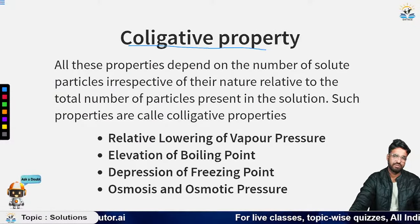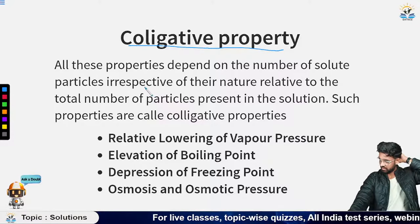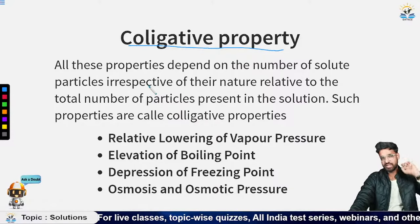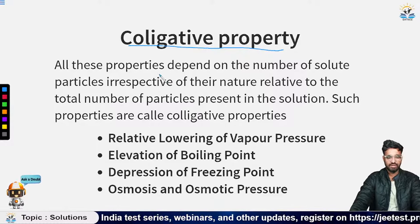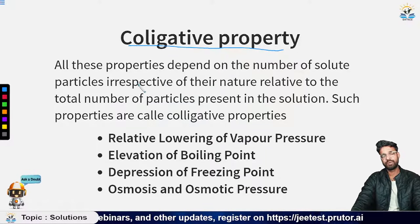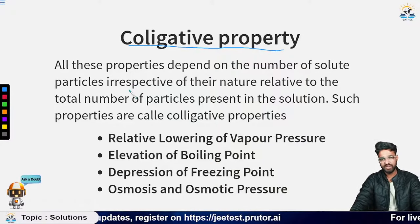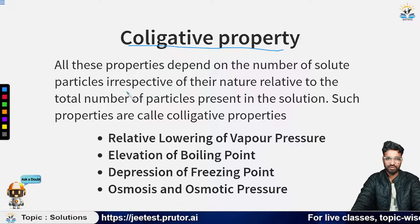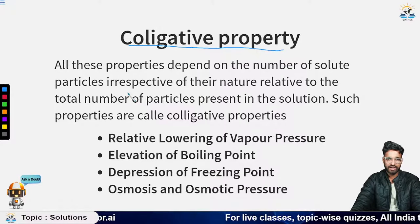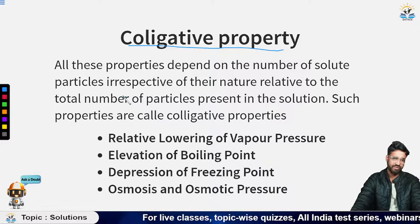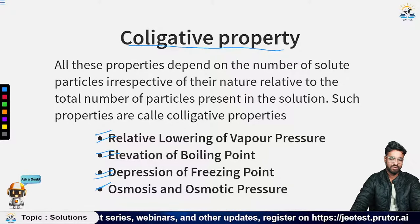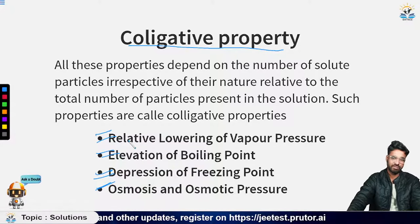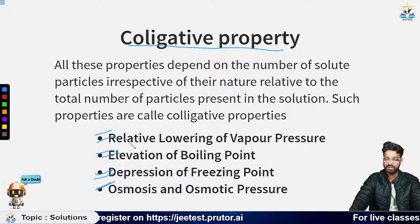Moving to colligative properties, we take a simplified approach: we do not consider intermolecular interactions. When calculating properties like vapor pressure, boiling point, freezing point, and osmotic pressure, only the number of solute particles dissolved matters — not their identity or nature.